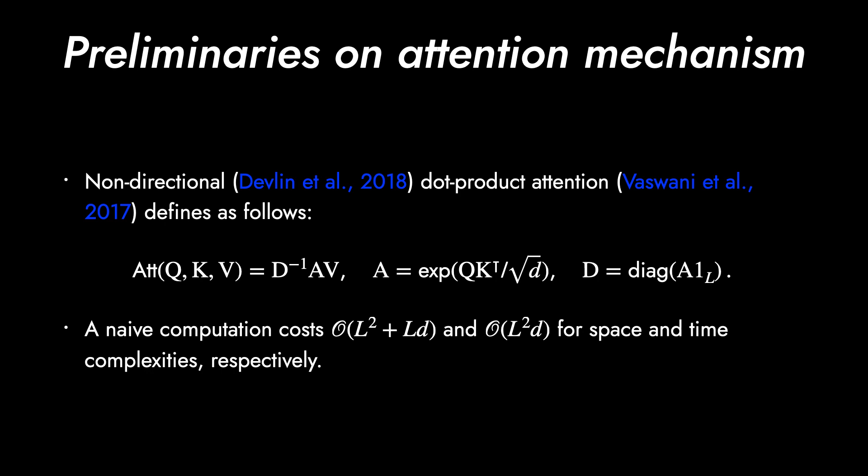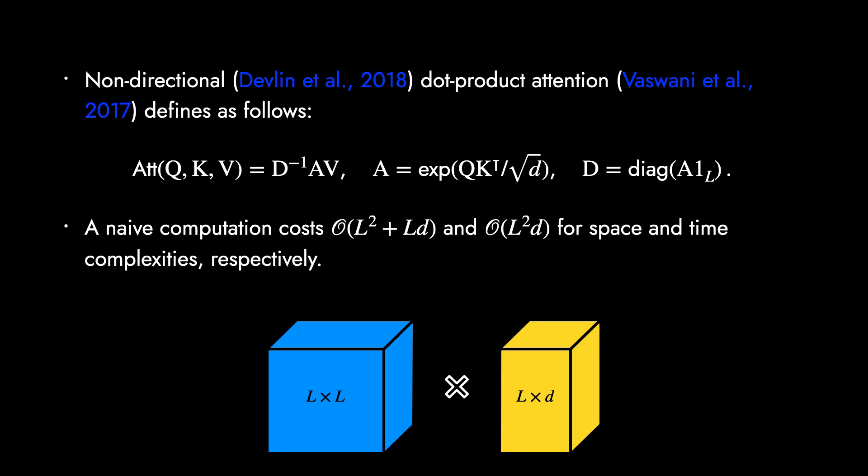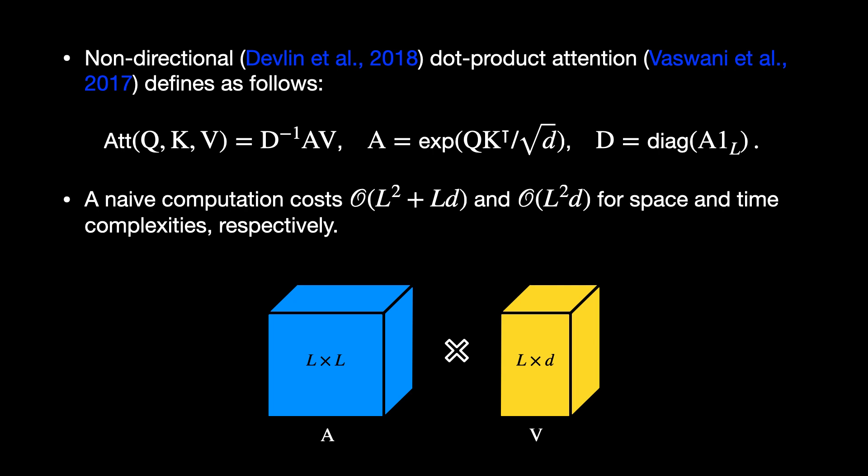The function of attention takes Q, K, and V. The value matrix V is transformed by attention matrix A followed by the inverse of diagonal matrix D, which normalizes the output to be the convex combination of value vectors or tokens. The attention matrix A is the output of exponential function where the input is the dot product of Q and K discounted by the root of small d. This discount is about statistical regularity. The diagonal matrix D is the row sum of the attention matrix. Therefore, the computational cost is the cost of matrix-matrix multiplication. As you see in this figure, the major cost comes from the matrix-matrix multiplication of A and V.